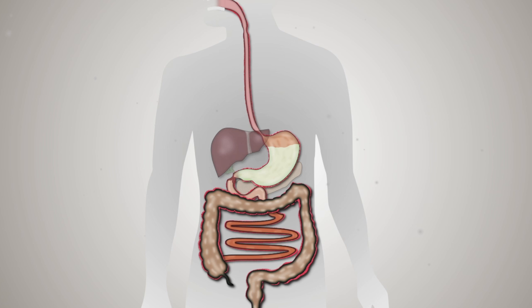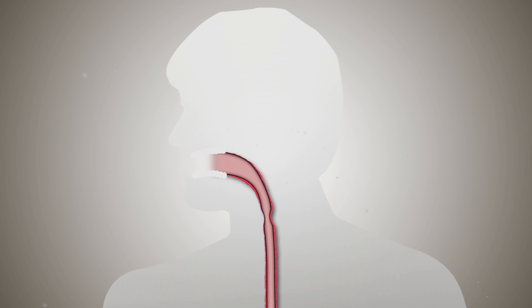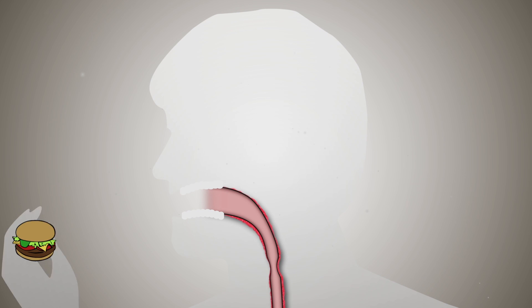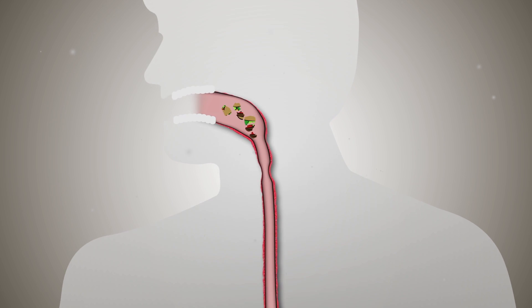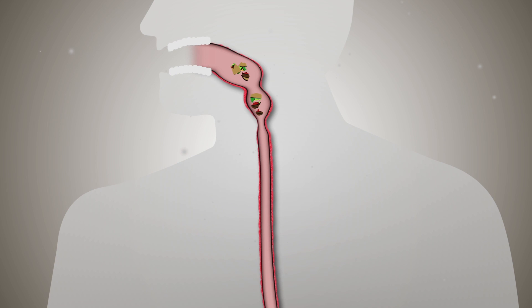The digestive system consists of a digestive tube and a number of key organs. Digestion begins in the mouth, where mastication, or chewing, and the mixing of food with saliva takes place.